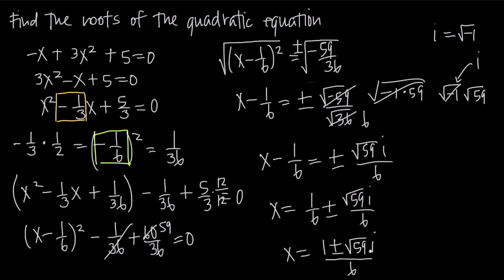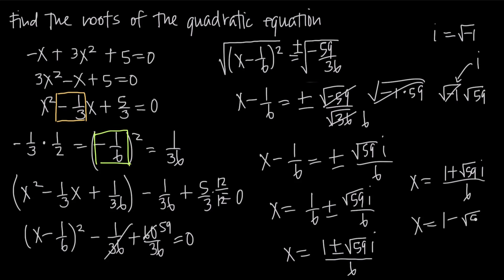These are going to be the two roots of the quadratic equation. We notice that both roots involve the imaginary number i, which means that these are complex roots of the quadratic equation. If we want to write them out separately: x equals 1 plus root 59 times i all over 6, and x equals 1 minus root 59 times i all over 6.